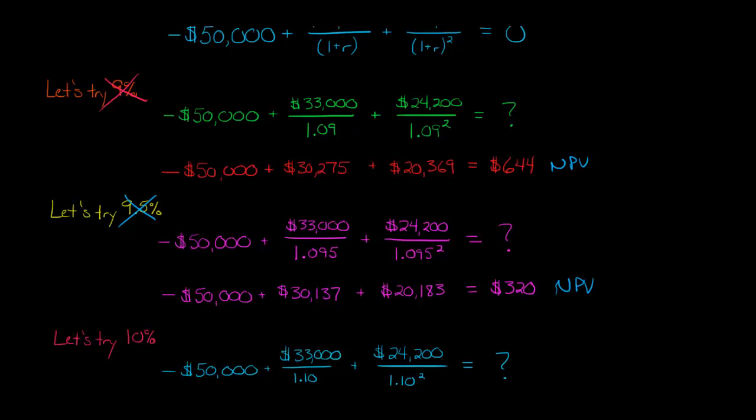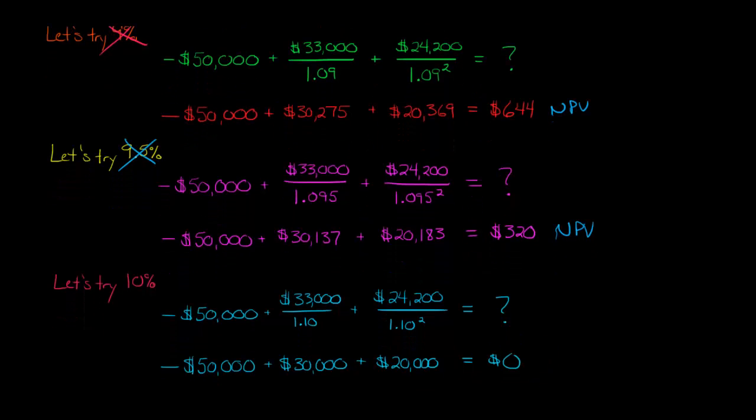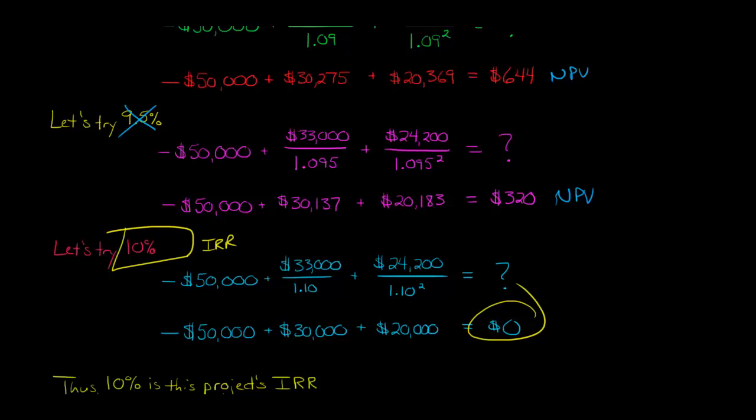Let's try now 10%. So now we're just going to plug in for this R, we're going to plug in a 0.1. And so if we do that, now we've got negative 50,000 plus 33,000 divided by 1.1. And then plus 24,200 divided by 1.1 squared, to the second power. What does that equal? And that equals zero. So now that we've actually found a rate here that equals zero, now we know what our IRR is. Our IRR is 10% because when we discount these cash flows and net them together using a discount rate of 10%, that was where we got this 0.1, when we do that, we end up with an NPV for the project of zero.